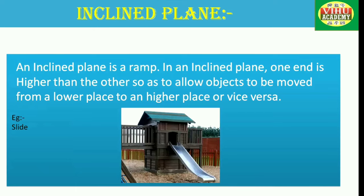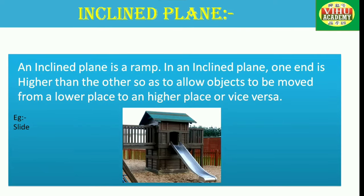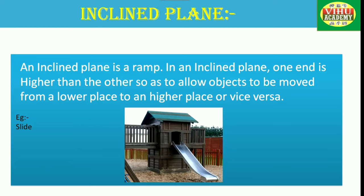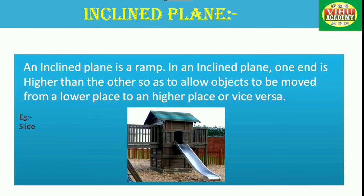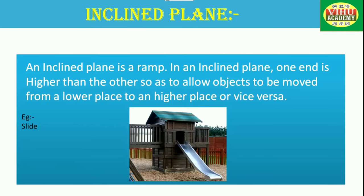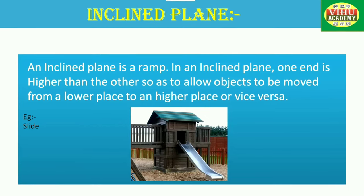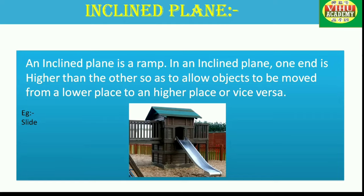Now let's see what is an inclined plane. An inclined plane is a ramp where one end is leveled higher than the other, so as to allow objects to be moved from a lower place to a higher place or vice versa. When you move objects over an inclined plane, you use less energy or force, thus making the work of moving things easier. The best example of an inclined plane is a slide that children play on — here one end is higher than the other.